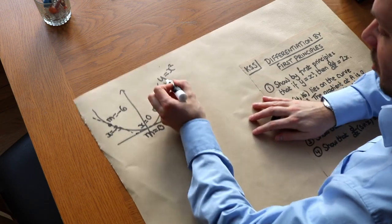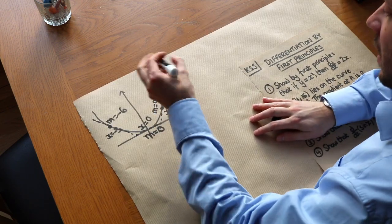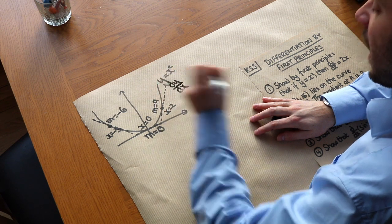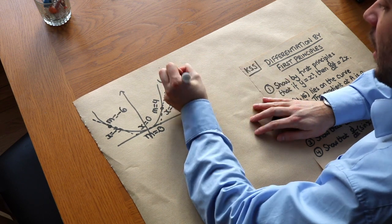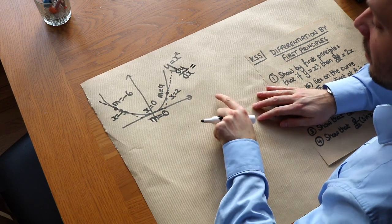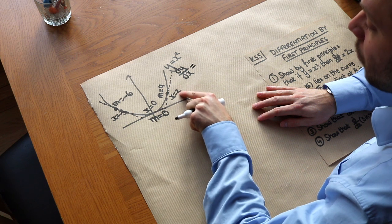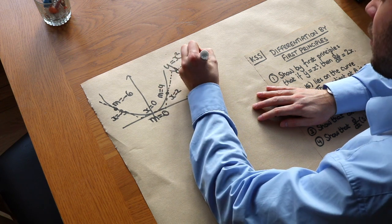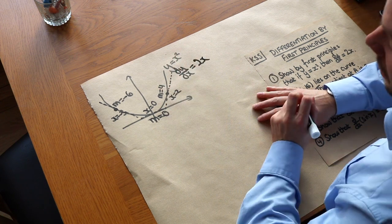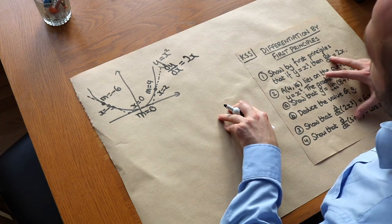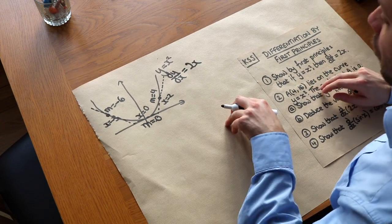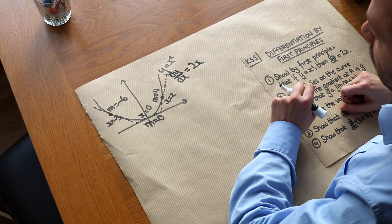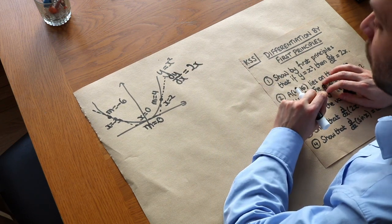We call that the gradient function. So if y was equal to x squared, we use dy over dx to express the gradient function, and in this case the gradient function is 2x. We'll see in this video how we can prove that the gradient function is 2x if the function was x squared, or for other functions as well.